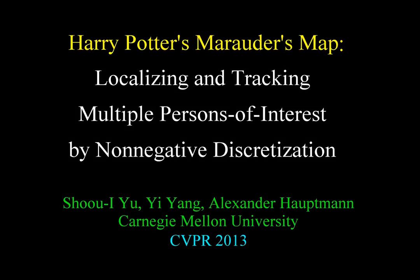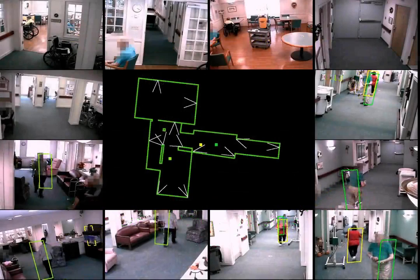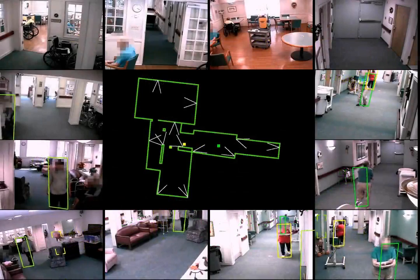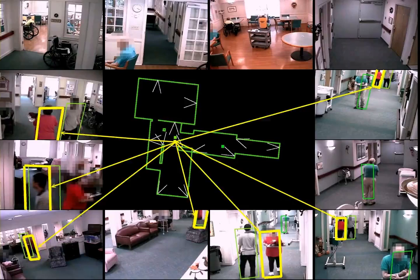In this paper, we propose an algorithm which can pinpoint the location of each person of interest at all times in a complex indoor environment.